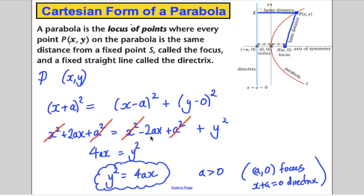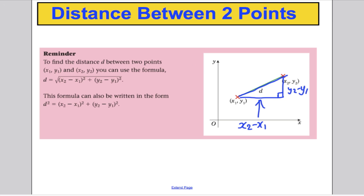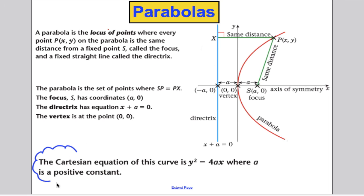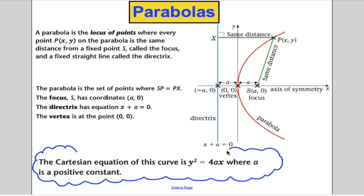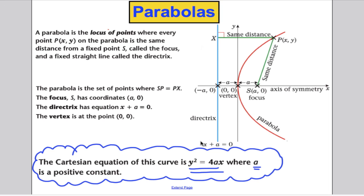We've proved that from first principles. To update our previous work: this is the same diagram as before, but now we know that the Cartesian equation of this curve is y² equals 4ax, where a is positive. I want you to have a go at an example where, given a value of a, you derive the Cartesian equation from first principles using the distance from any point to the focus and directrix.